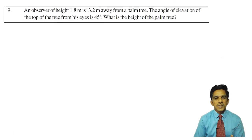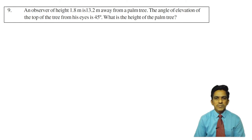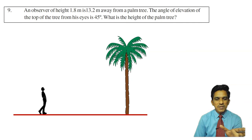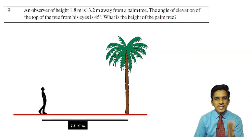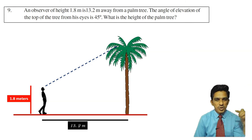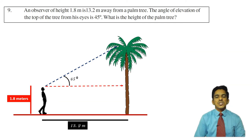Let us move to the next problem. An observer of height 1.8 meters is 13.2 meters away from a palm tree. The angle of elevation of the top of the tree from his eyes is 45 degrees. What is the height of the palm tree? Here you have a palm tree and an observer standing at a distance of 13.2 meters from the tree. The observer's height is 1.8 meters and the angle of elevation is 45 degrees.